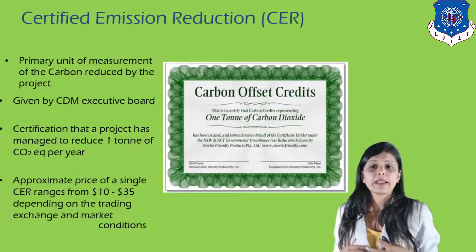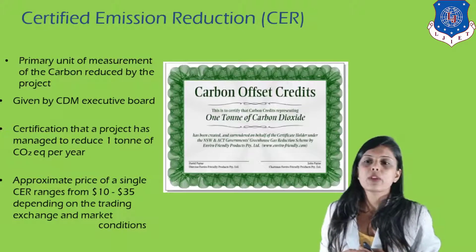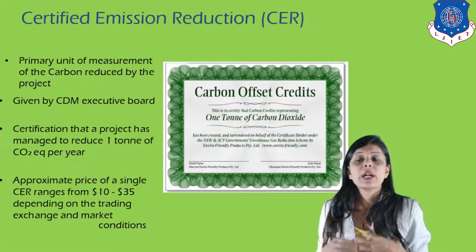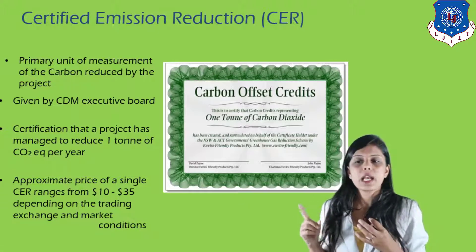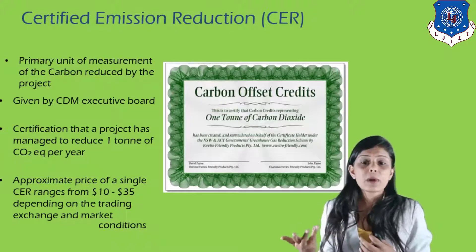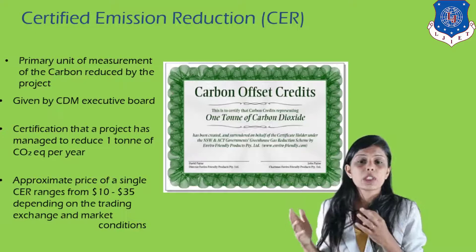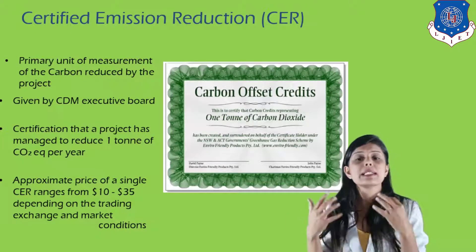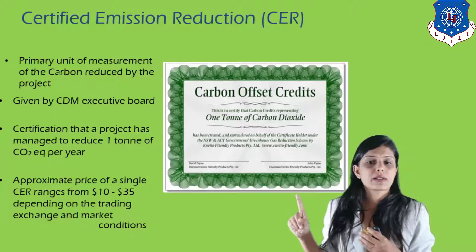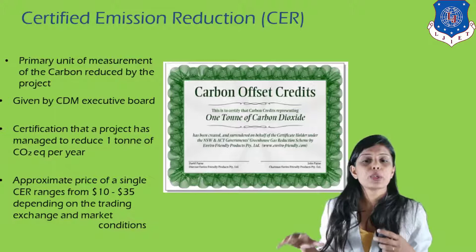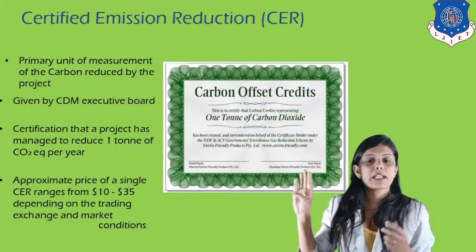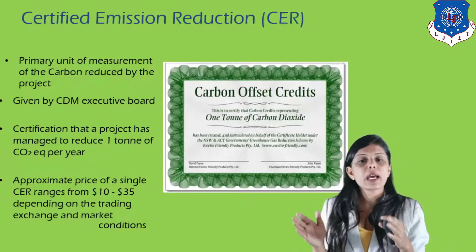A Certified Emission Reduction (CER) is the primary unit of measurement for carbon reduced by a CDM project, issued by the CDM Executive Board. It certifies that a project has reduced one tonne of CO2 per year. The price of a single CER ranges from $10 to $35 depending on market conditions. So for every tonne of carbon you offset, you pay $10 to $35 to companies developing clean products — balancing your total carbon footprint. For example, if you release 35 tonnes but pay credits for 25 tonnes, your net footprint is only 10 tonnes.